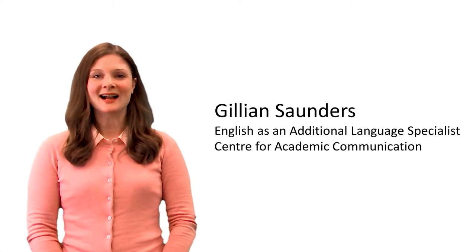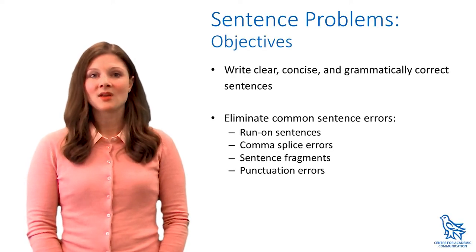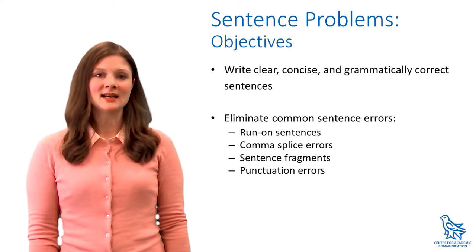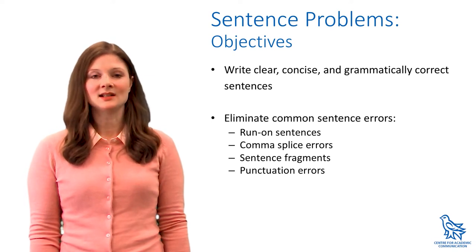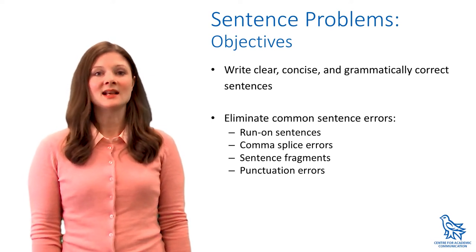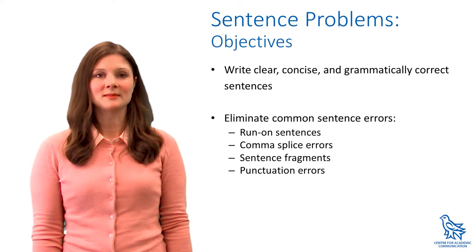Hi, I'm Jillian from the Center for Academic Communication, and this is Sentence Problems. First, you need a basic knowledge of the different types of sentences in English and how phrases and clauses work. If you need a reminder, check out our resource on sentence types. There are three main sentence problems: run-on sentences, comma-splice errors, and sentence fragments. Today we'll look at these as well as a few common punctuation problems.